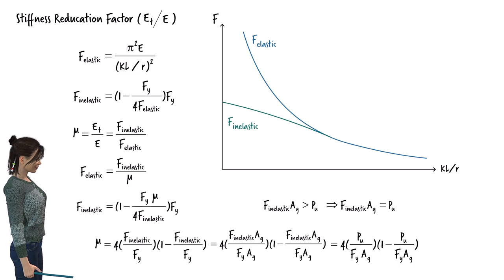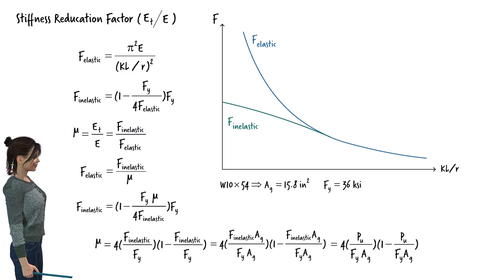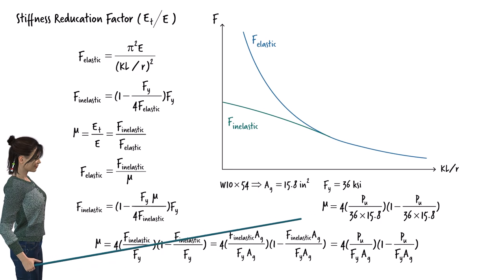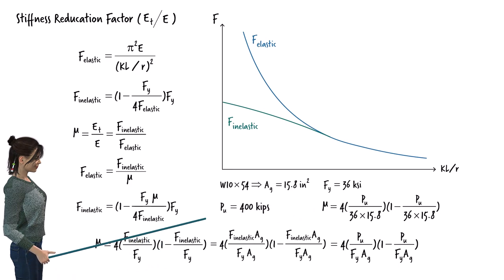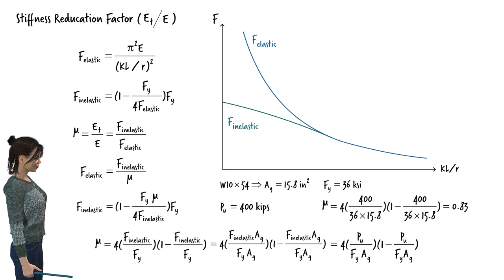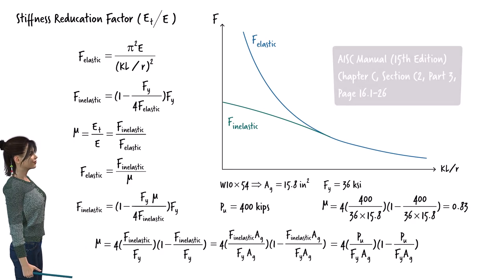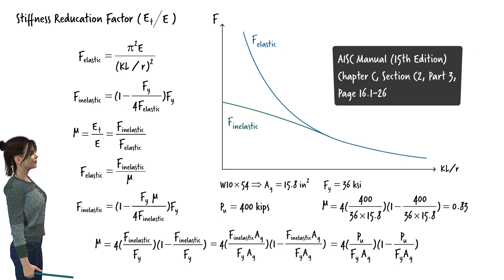This equation enables us to estimate the stiffness reduction factor given the load applied and the grade of steel. For example, if the column has a W10 by 54 cross-section and a yield stress of 36 KSI, with a cross-sectional area of 15.8 square inches, and the column is subjected to a factored compressive load of 400 kips, we can directly calculate the stiffness reduction factor. Note that this formulation does not require an iterative solution; however, since we assume the column is exactly as strong as the applied force, we are underestimating the actual design strength. This conservative approximation is acceptable practice per AISC Chapter C, Section C2, Subsection 3.